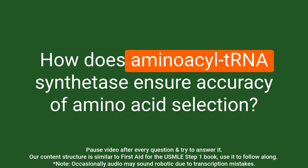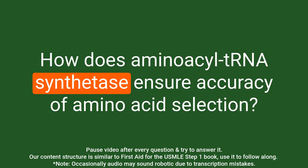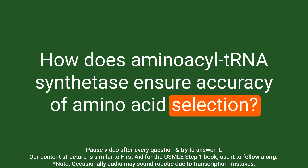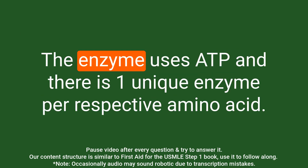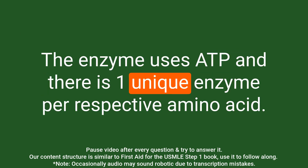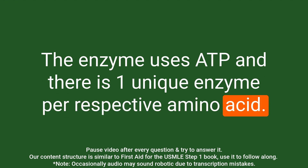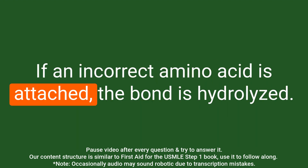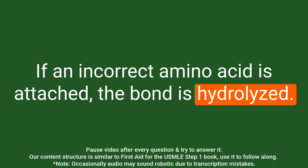Question: How does aminoacyl-tRNA synthetase ensure accuracy of amino acid selection? Answer: The enzyme scrutinizes the amino acid, and there is one unique enzyme per respective amino acid. If an incorrect amino acid is attached, the bond is hydrolyzed.